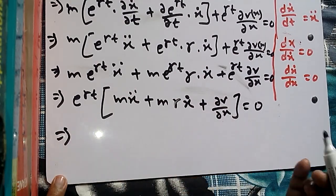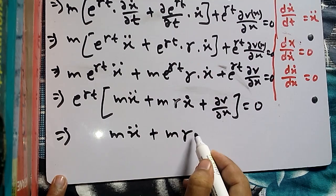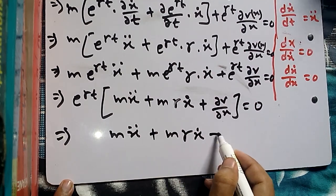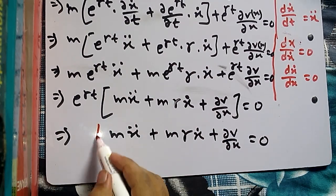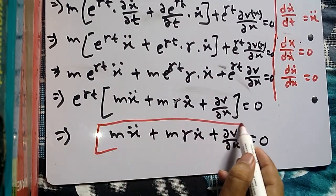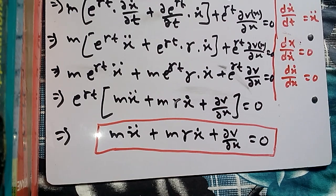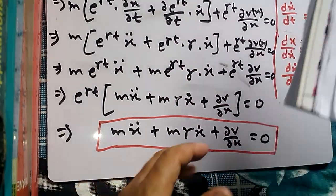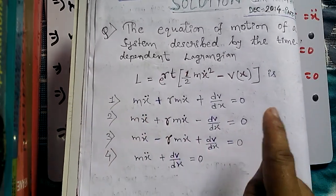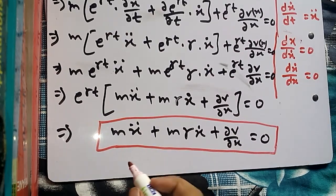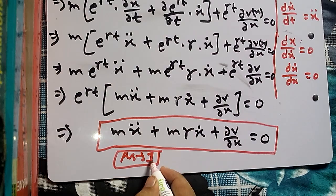Taking the remaining term to the right-hand side, we are left with m x-double-dot plus m gamma x-dot plus ∂V/∂x = 0. This is the equation of motion obtained using the Lagrange equation by substituting the given Lagrangian. This matches answer option 1, so the answer is option A or 1. Thank you.